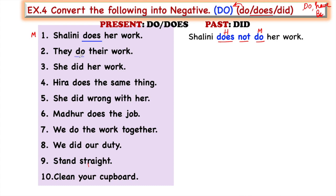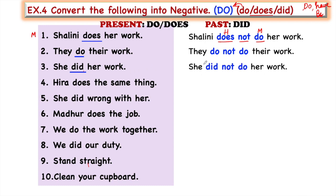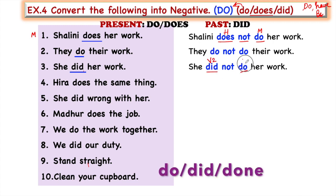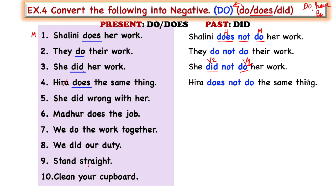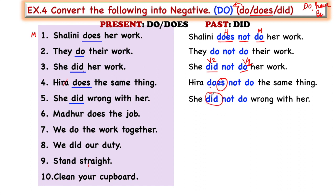'They do their work' — main verb, no helping verb — take the help of 'do': 'They do not do their work.' 'She did her work' — no helping verb — take the help of 'did': 'She did not do her work.' When using second form at one place, first form must come for the main verb — two second forms cannot come together. 'Hira does the same thing' → 'Hira does not do the same thing' — two S or ES cannot come together, so we remove it from the main verb. 'She did wrong with her' → 'She did not do wrong with her.'